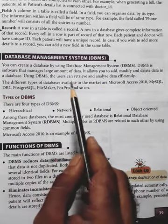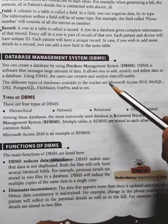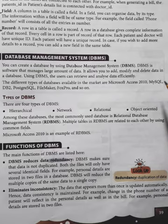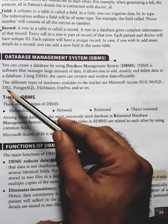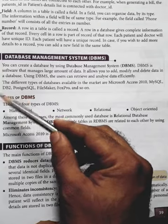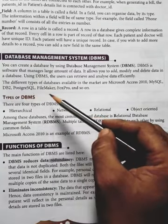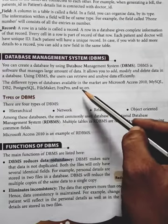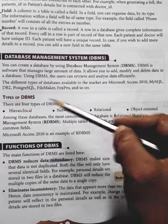The different types of databases available in the market include Microsoft Access 2010, MySQL, DB2 — which is a product of IBM — PostgreSQL, FileMaker, FoxPro, and so on. These are some examples of database management systems.